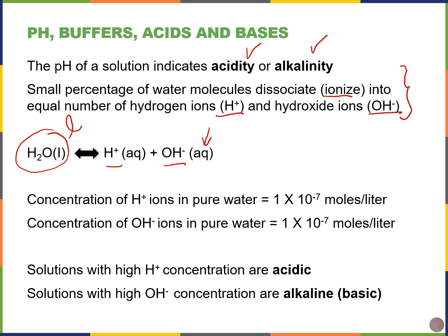In pure water, the concentration of hydrogen ions is 1 times 10 to the negative 7 moles per liter, and the same is true for the hydroxide ions. If you have a high proton concentration in a solution, it's acidic. If you have a low proton concentration or high hydroxide ion concentration, the solution is basic or alkaline.